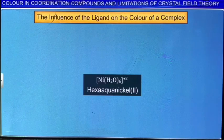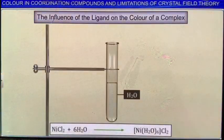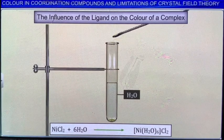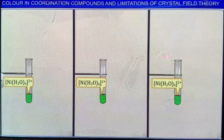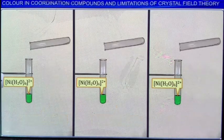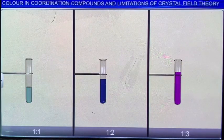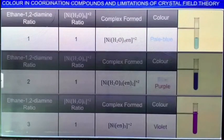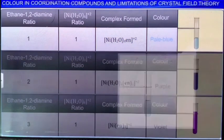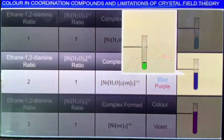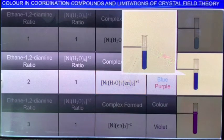The influence of the ligand on the color of a complex may be demonstrated by considering the hexaaquanickel(2) complex. When nickel(2) chloride is dissolved in water, it gives the green hexaaquanickel(2) complex. When the didentate ligand ethane-1,2-diamine is added progressively in different molar ratios, different complexes with varying colors are formed. Addition in a molar ratio of 1:1 gives a pale blue tetraaqua(ethane-1,2-diamine)nickel(2); at 2:1, a blue or purple dye-aquabis(ethane-1,2-diamine)nickel(2) is formed; and at 3:1, a violet tris(ethane-1,2-diamine)nickel(2) complex results.